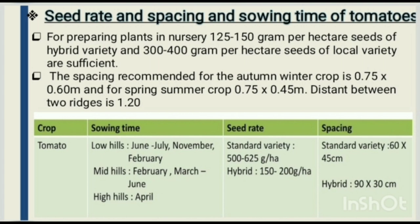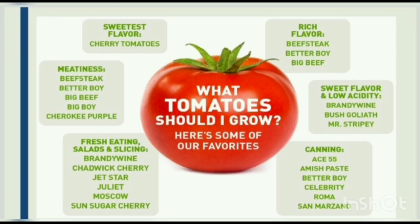Spacing: standard variety 60 × 45 cm, hybrid 90 × 30 cm. What tomatoes should I grow? For sweetest flavor: cherry tomatoes. For meatiness: Beefsteak, Better Boy, Big Beef, Big Boy, Cherokee Purple. For rich flavor: Beefsteak, Better Boy, and Big Beef. For sweet flavor and low acidity: Brandywine, Bush Collet, Mr. Stripey. For fresh eating, salads, and slicing: Brandywine, Chadwick Cherry, Jetstar, Juliet, Moscow Sun, Sugar Cherry. For canning: Ace 55, Amish Paste, Better Boy, Celebrity, Roma, and San Marzano.